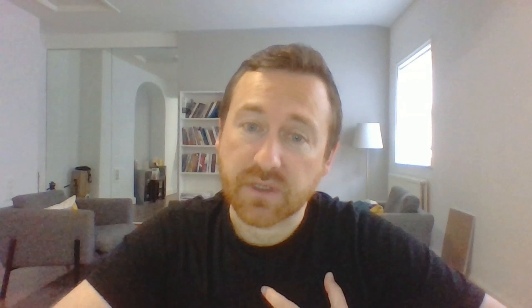Rather than dismissing the thought as one of those unpleasant thoughts we're all capable of having, they appraise it as saying something really deep about themselves — and not just about now, but about their future. Because this thought goes against who they see themselves as being — what we call ego-dystonic — they've appraised it as a potential threat to themselves, their loved ones, and their future. That's where we get the emotional state of fear and shame on the left side of the model.